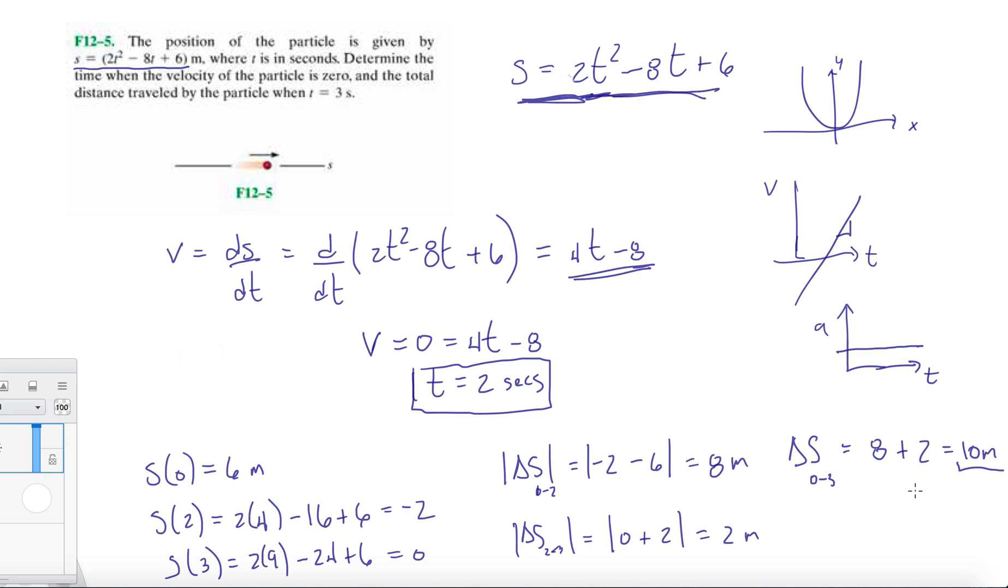All right guys, so we found the time that it takes for your particle to have a velocity of zero, and then we found the total distance traveled between zero and three seconds. Hope this video helps. If you have comments, questions, or concerns, let me know down below. Don't forget to give it a like, and I'll see you guys in the next video. Thank you, guys.